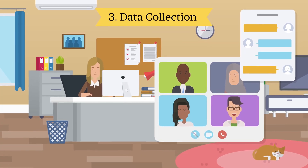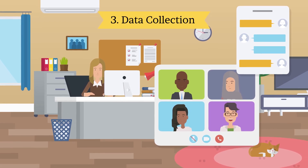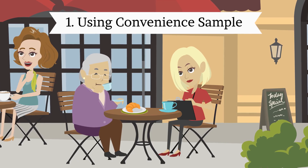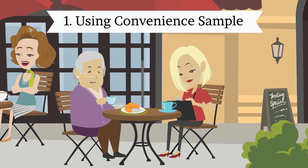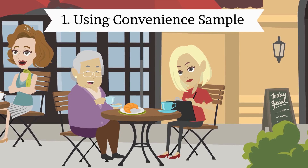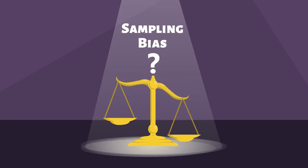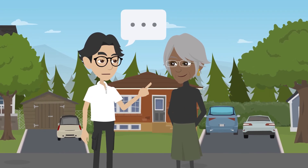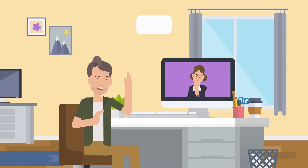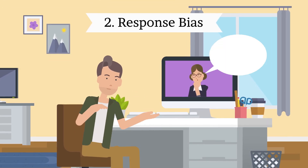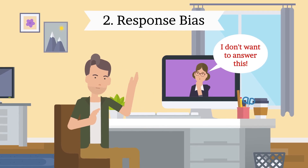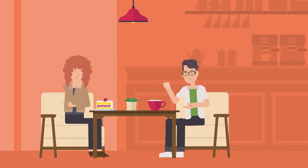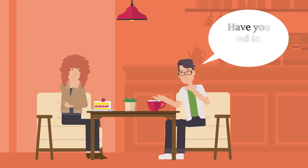Step 3 — Conduct the actual data collection activities following your plan or protocols. Data collection flaws include: Using a Convenience Sample — when the sample is not representative of the target population, it can introduce sampling bias. For example, collecting responses from easily available respondents. Response Bias — when individuals select an answer they know is incorrect because they are uncomfortable reporting their honest answer, for example, questions like 'Have you cheated in your marriage?'